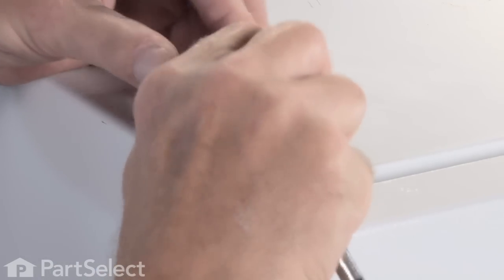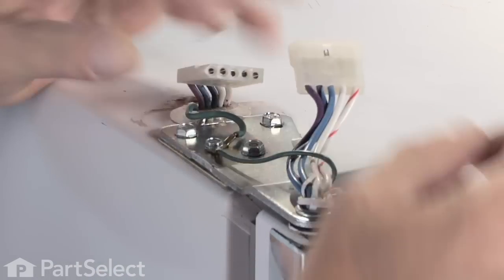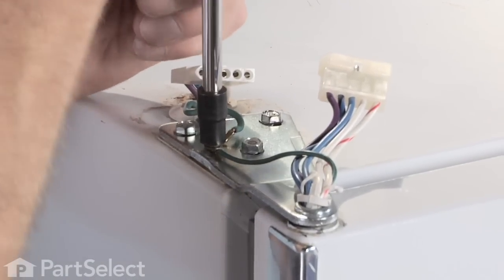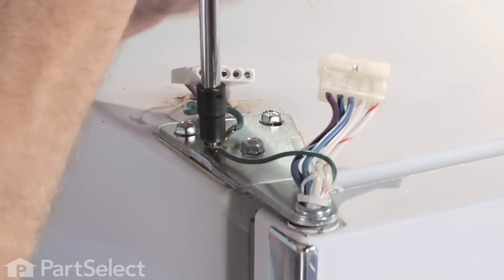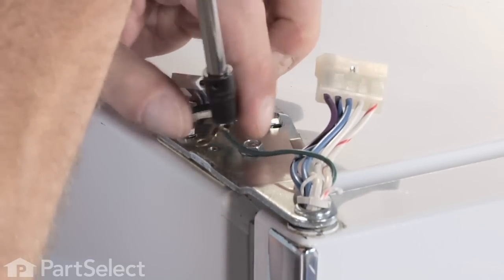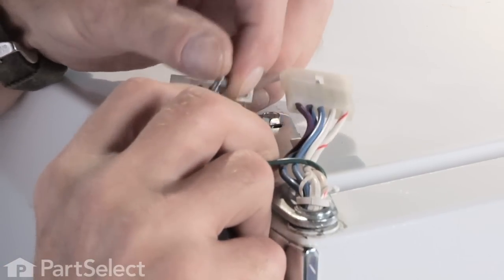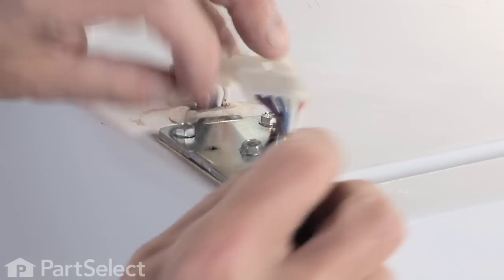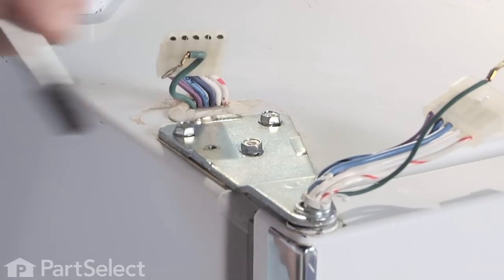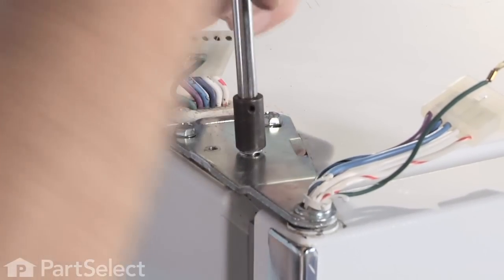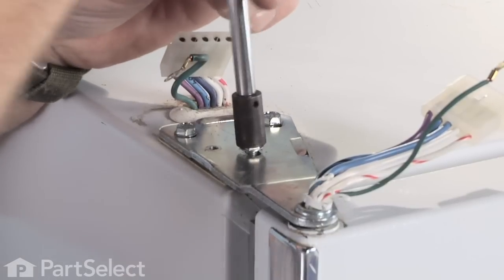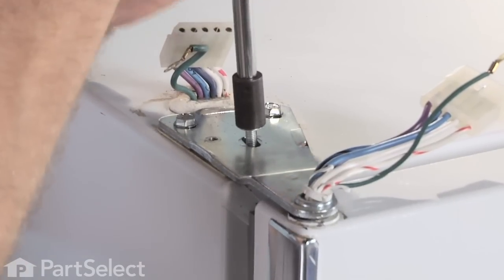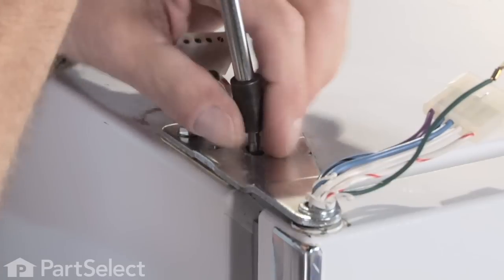Disconnect the wire harness, and there should be a separate green ground wire just fastened in place with a quarter inch hex head screw, and remove that. Now we're ready to remove the hinge, held in place with three five-sixteenths machine screws. The freezer door hinge will go with the door. We're going to remove the door.